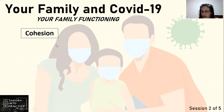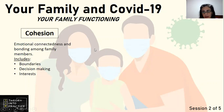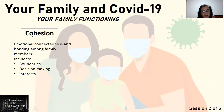What is cohesion? Cohesion is the emotional connectedness and bonding among family members, and this can include boundaries, decision-making, and interests. In other words, how enmeshed is this family? Do they make each other's decisions? Do they share all the same interests? Do they have any boundaries? Do they give each other privacy and time on their own? Do they tell everything to one another? Is it a problem or not?